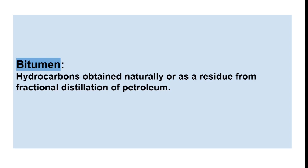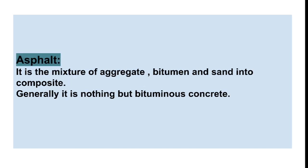Bitumen. Generally, bitumen is nothing but a hydrocarbon obtained naturally or as a residue from fractional distillation of petroleum. If we fractionally distillate petroleum, we get gasoline, naphtha, petrol, diesel, kerosene, and the final product is nothing but bitumen.